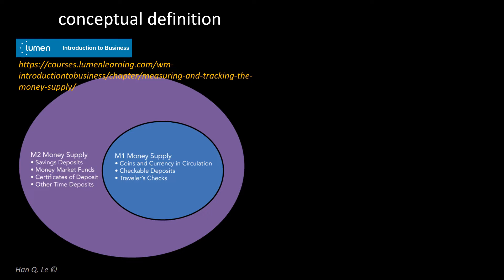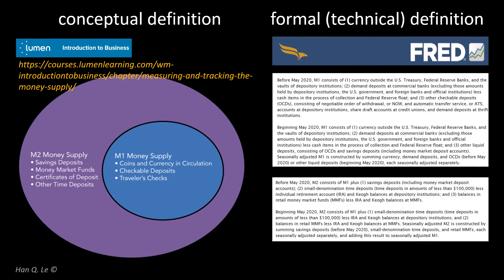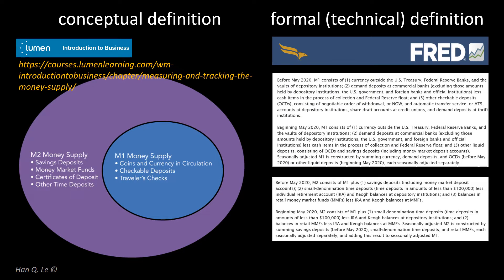It is sufficient to consider M1 and M2 as the volume of money available for economic activities. M1 being the most liquid money for transactions such as buying and selling. M2 includes M1 plus additional money in consumers' savings.